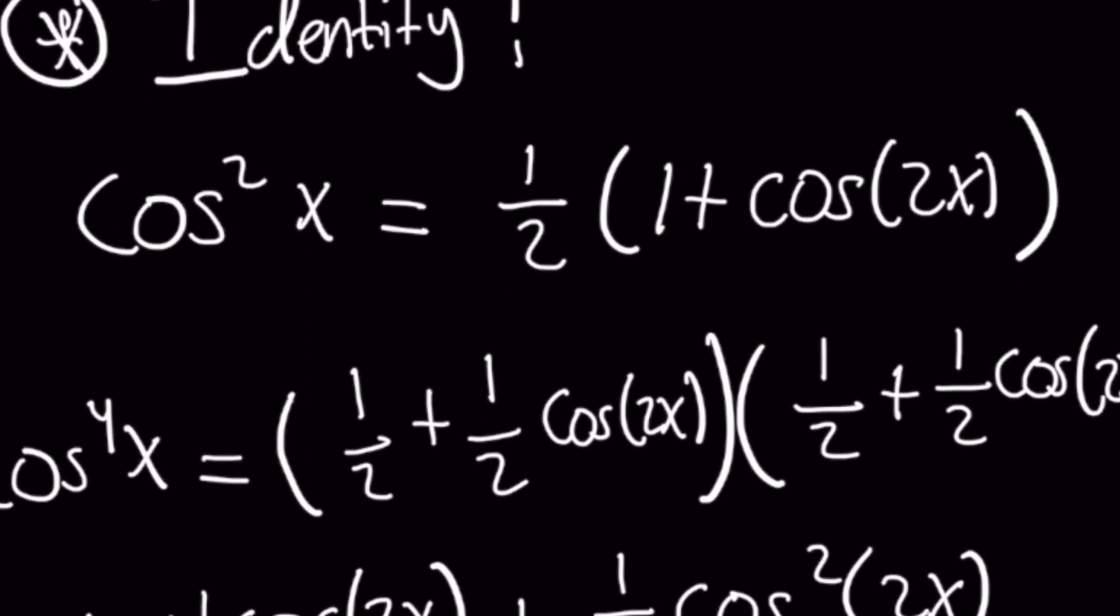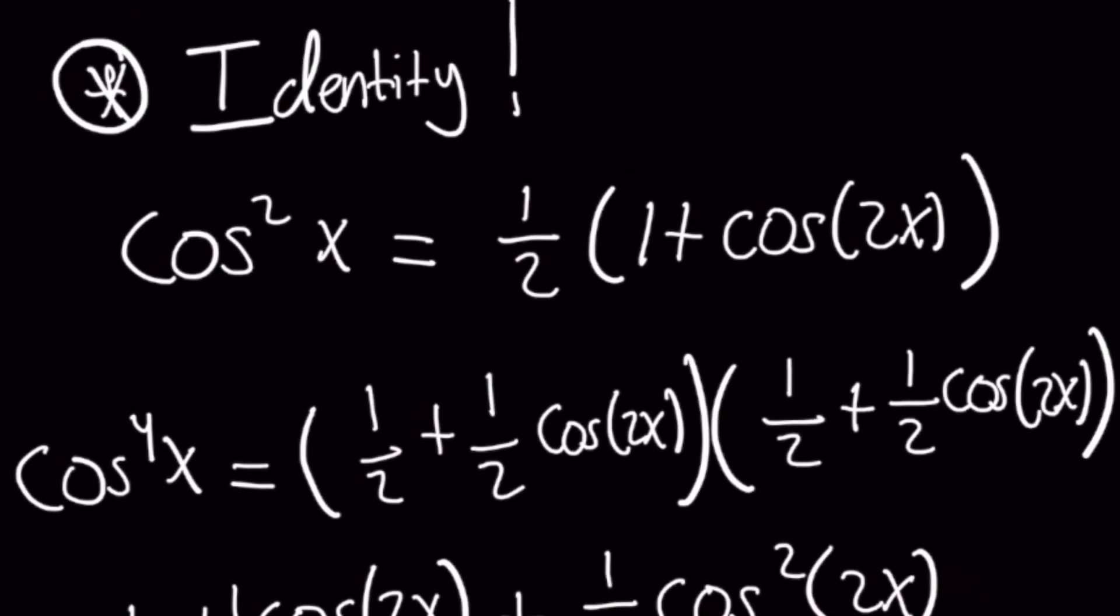Well, the cool thing then is that we can say okay, cosine squared of x times cosine squared of x, which is the original problem itself, cosine to the fourth, is the same as simply taking that one-half plus one-half cosine of 2x, because I distributed the one-half through, and squaring itself.